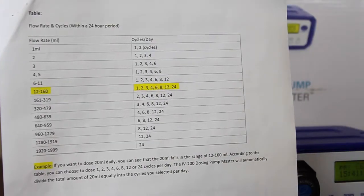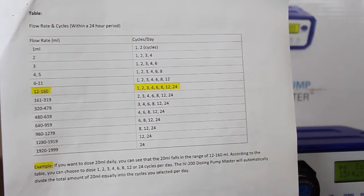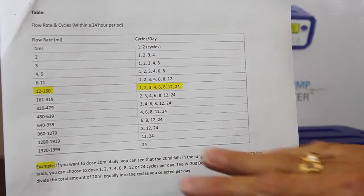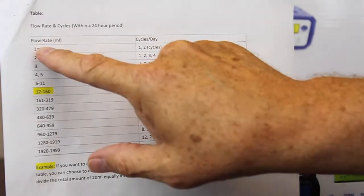The last thing we want to talk about for your convenience is how to understand the chart in the back of the instruction sheet. As an example, if you want to dose 20 milliliters a day, go down your flow rate.